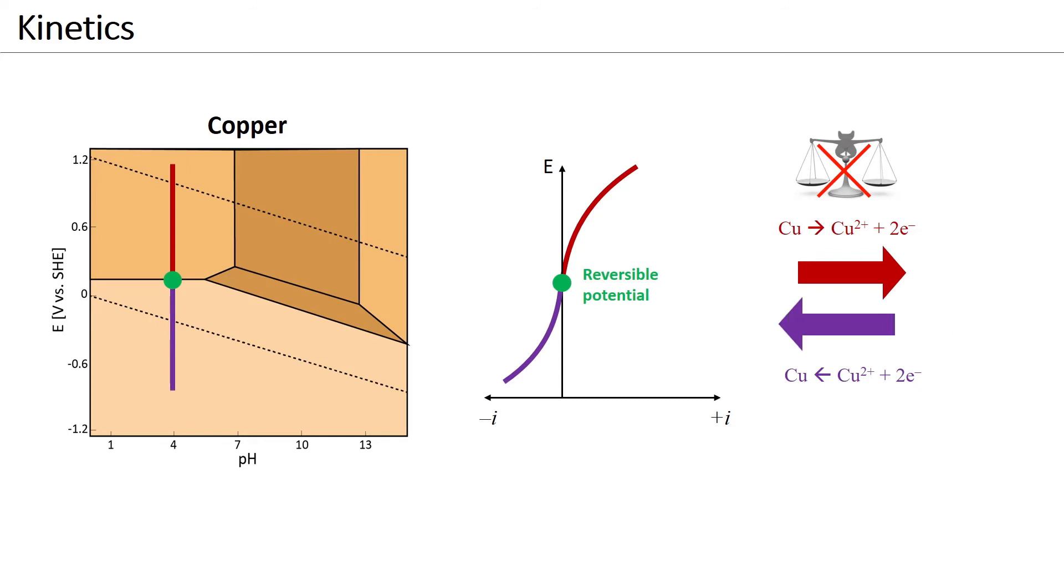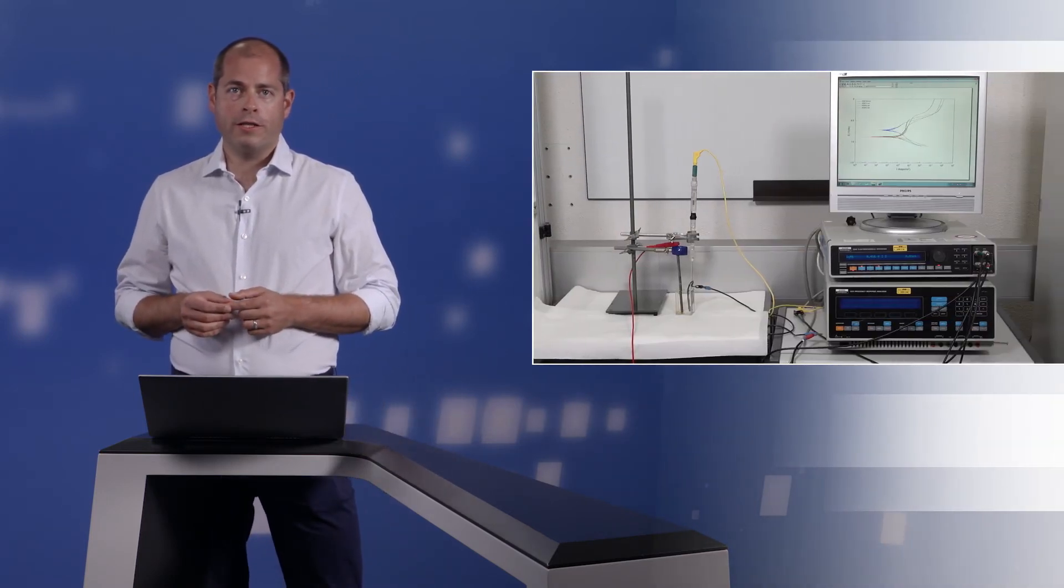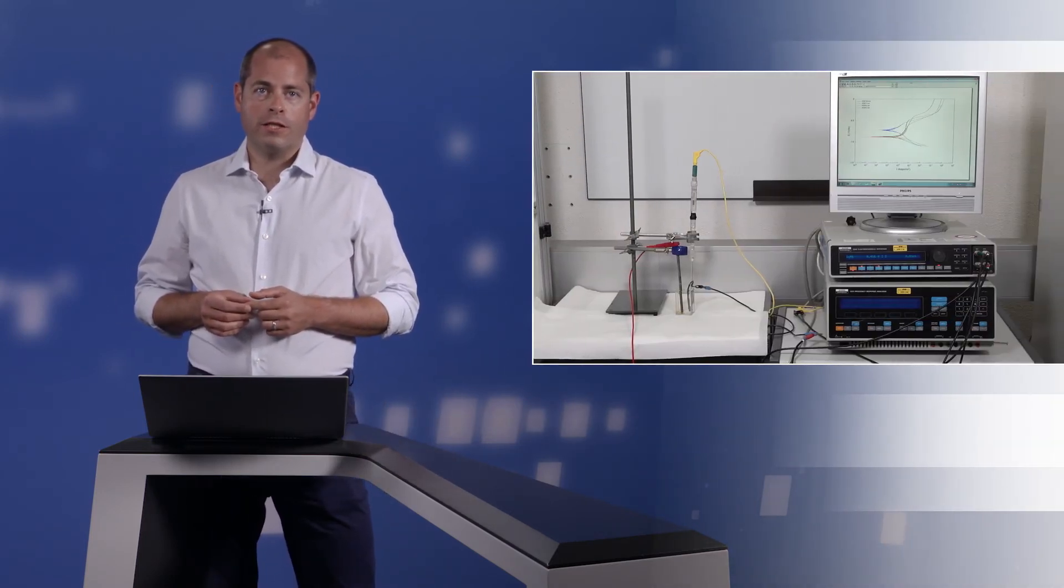Since electrochemical reactions include the generation or consumption of electrons, it is common to express the reaction rate as electrical current or, if related to the exposed area, as current density. The current density is proportional to the reaction rate. The relationship between current and potential is called a polarization curve. This curve will have a different shape for different metals in different environments.